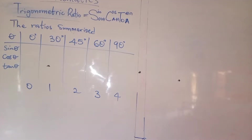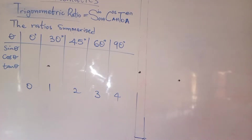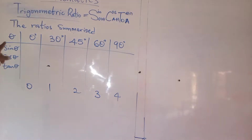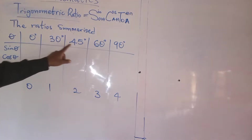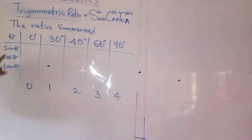This is our measurement ratio summarized. We can do that in less than 2 minutes to get these values. Now, looking at the board, we see that we have 0, 30, 45, 60 and 90.